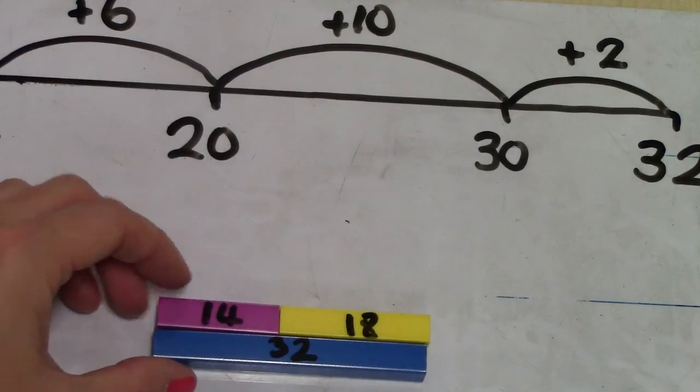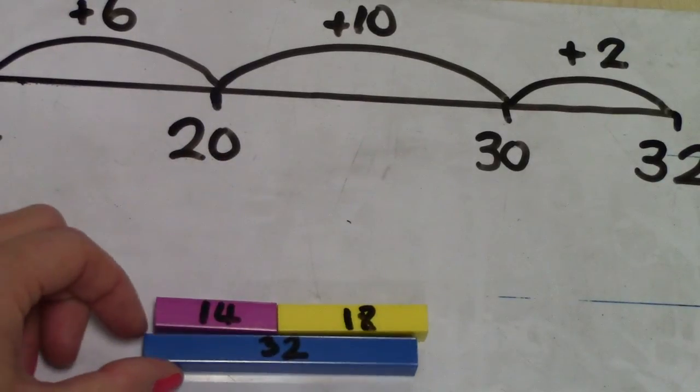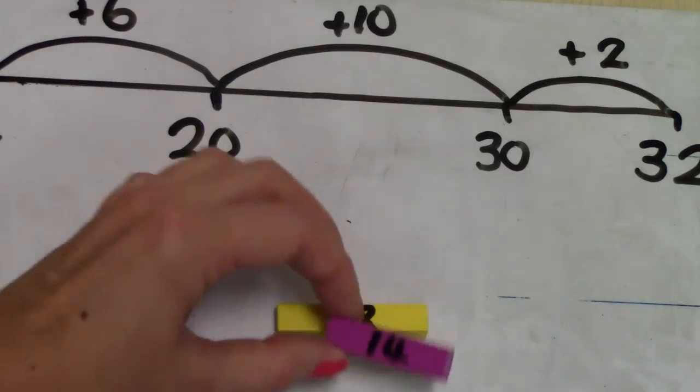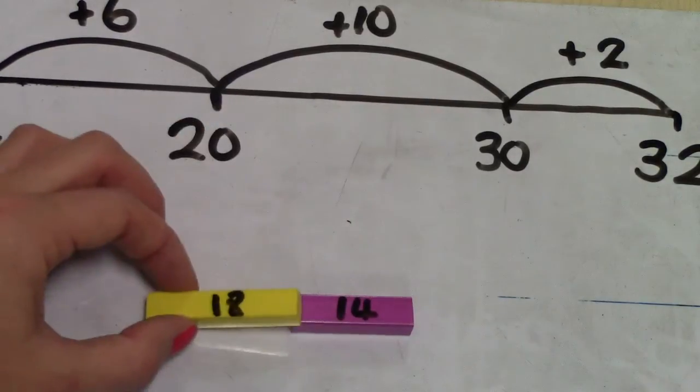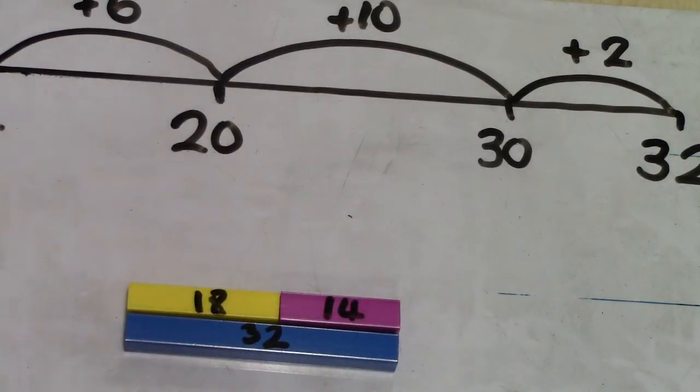If we add 14 and 18, that gives us 32. And if we do 18 add 14, that also gives us 32.